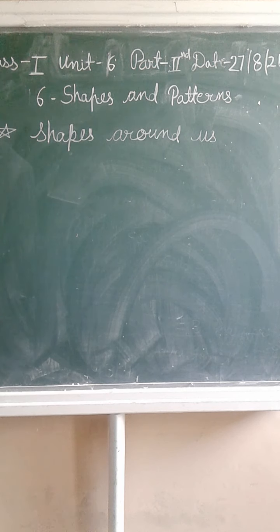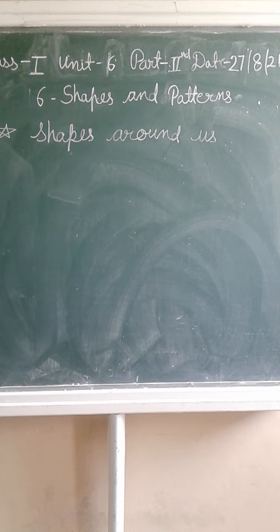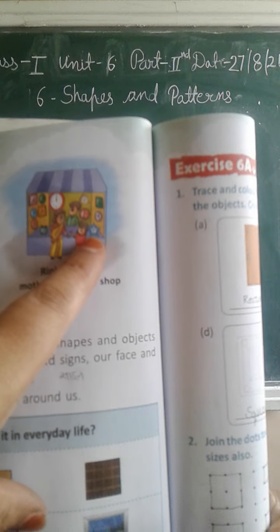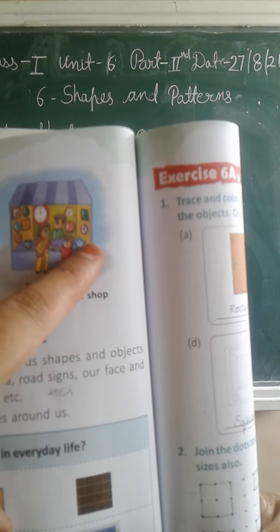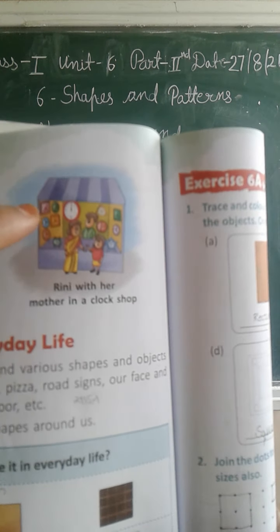Open page number 106 and see the Clock Shop in your book. Clocks are different shapes — for example, Circle, Square, Rectangle, Star, etc.